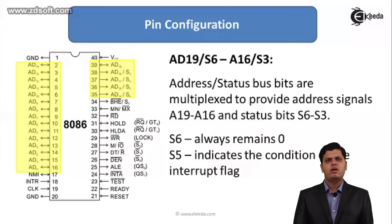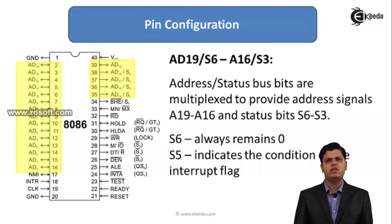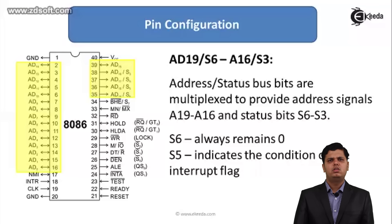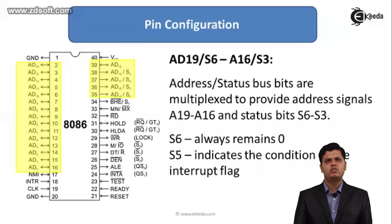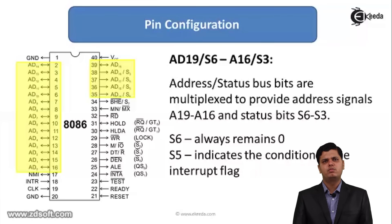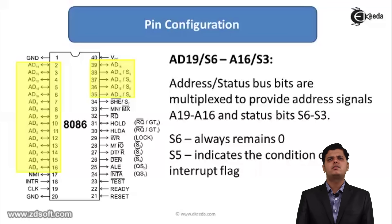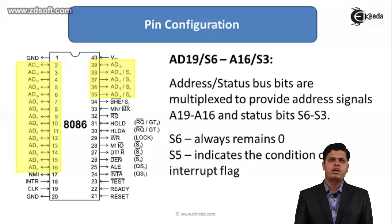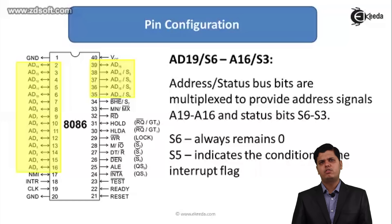It also has 4 more bits of address lines, A16 to A19, which are multiplexed with the 4 status signals S3, S4, S5, and S6. These 4 lines are used for sending the higher 4 bits of the address from the 8086. As discussed in the features of 8086, it has a 16-bit data bus and a 20-bit address bus, so the 16-bit data bus is multiplexed with the lower address and the further 4 bits are multiplexed with the status signals.